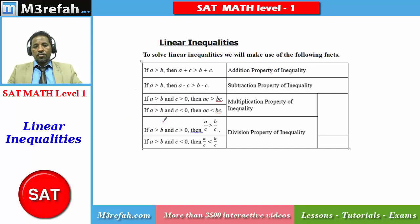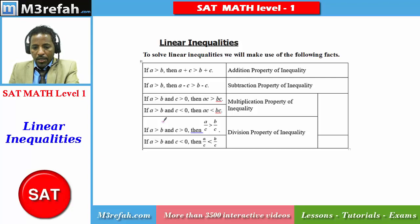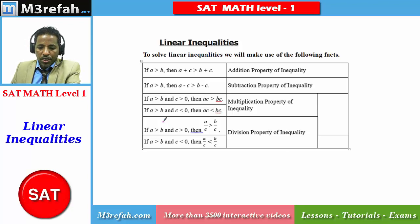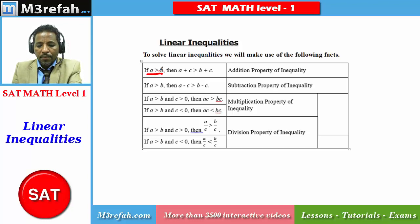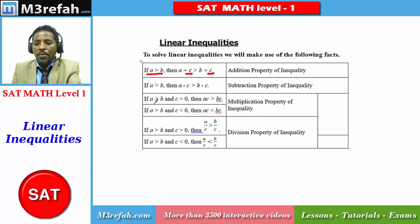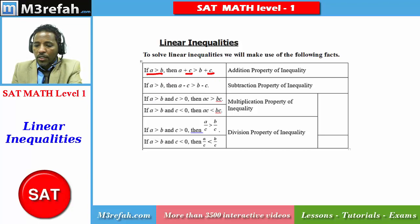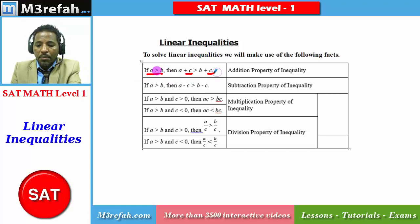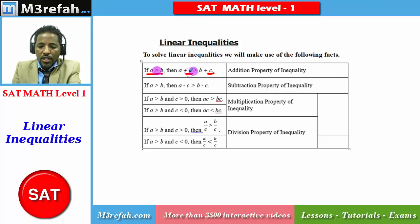Let's have some of the rules that can help us with linear inequalities. To solve linear inequalities we will make use of the following facts. First, given that A is greater than B, adding the same value of C on both sides of the inequality maintains the greater than sign. As you can see, A is greater than B, and even after you add the same number on both sides, the sign of the inequality doesn't change — it was greater than, and it's still greater than.